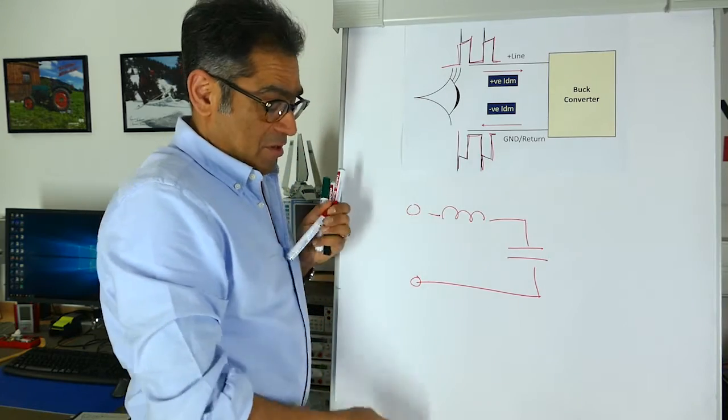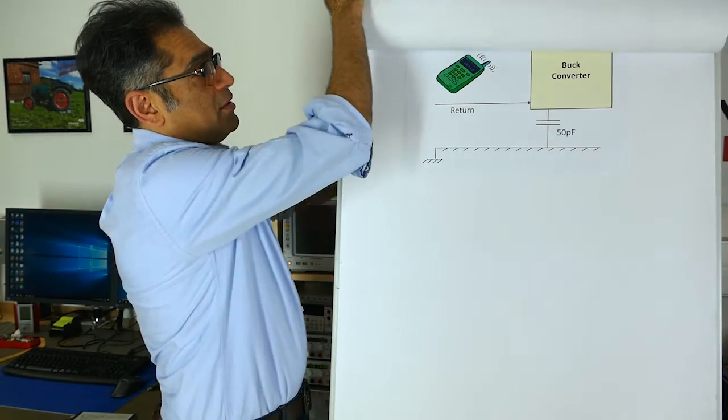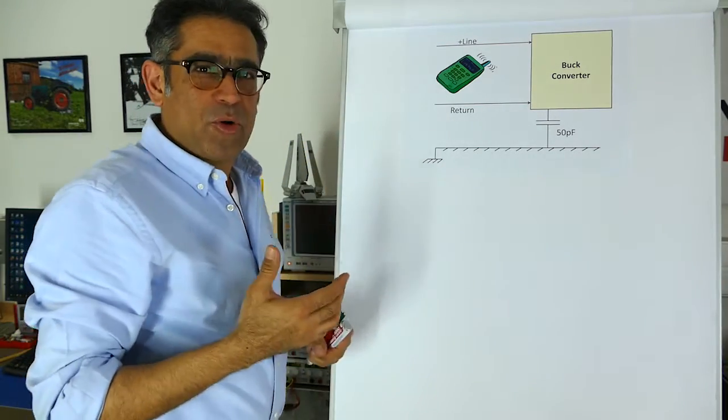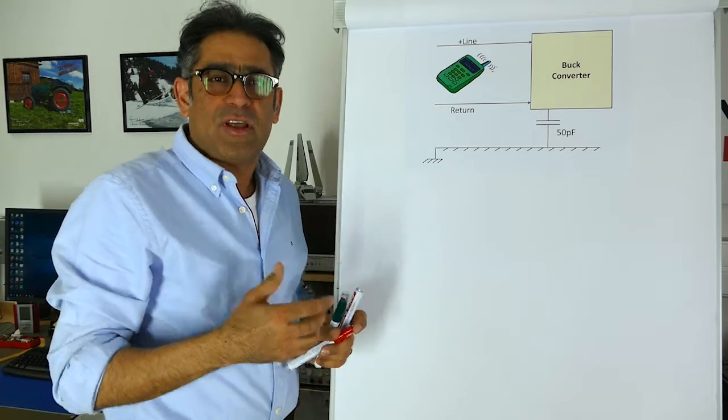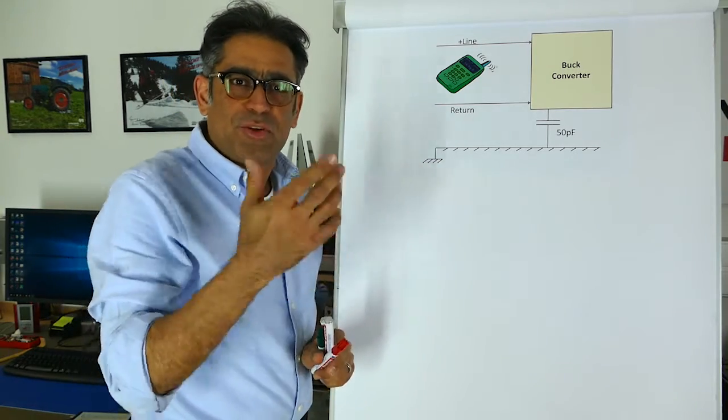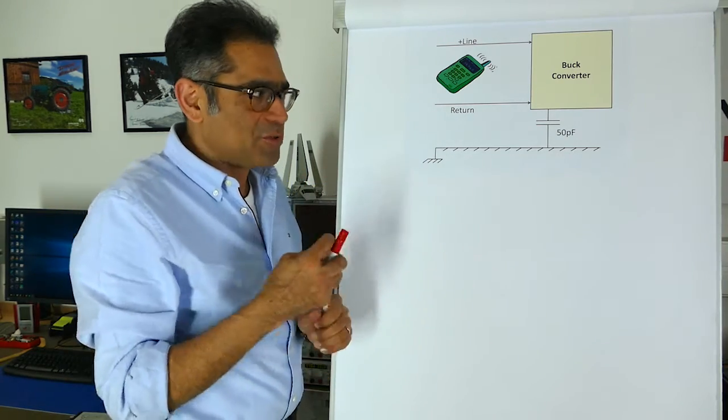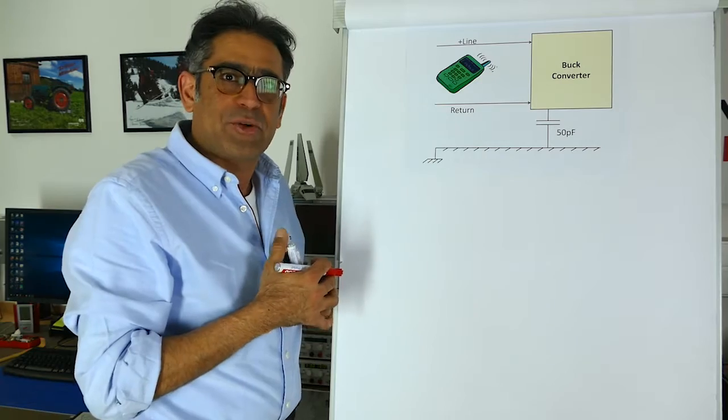The next type of current that we've got is the common mode current. Now that one is a little harder to visualize, mainly because we don't really talk about it very much in school or university. You only come to realize it afterwards when you start dealing with designing electronic circuitry.